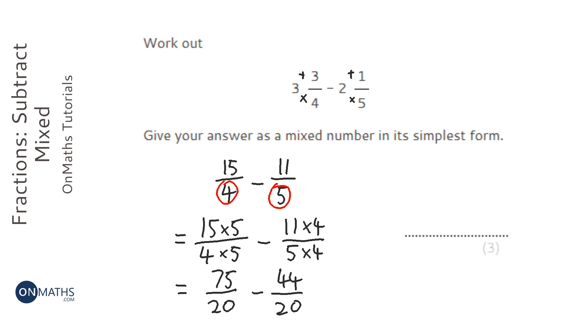Now, when we have the bottoms the same, all we need to do is take away the tops and keep the bottom the same. So I need to do 75 take away 44, which is going to be 31, and the bottom stays the same.